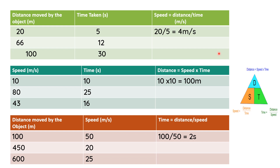Let's see some calculations. First example: distance moved by the object is 20 meters and time taken is 5 seconds. To find speed, use the formula: speed equals distance divided by time. That is 20 divided by 5, which equals 4. The unit is meter per second, so the answer is 4 meter per second.